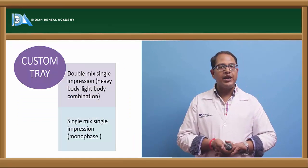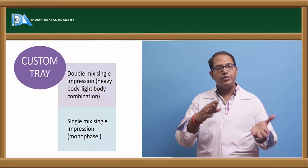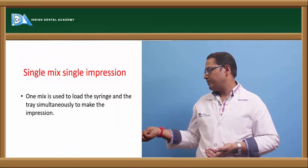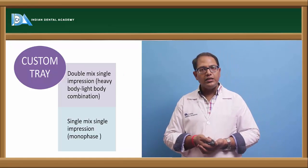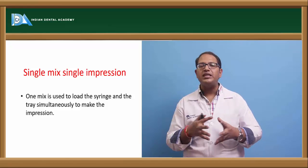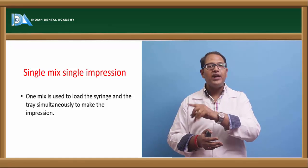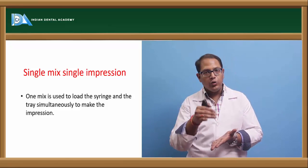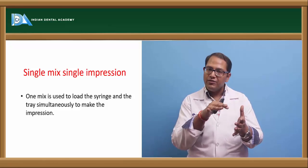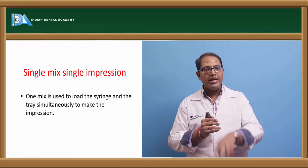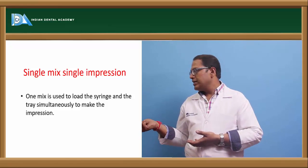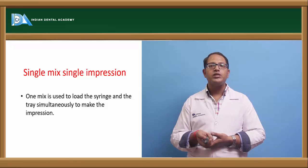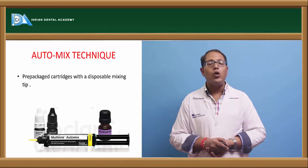For custom trays, the double mix single impression and double mix double impression techniques remain the same, except a custom tray is used instead of a stock tray. Single mix single impression is done with a material called monophase — a one-phased material used both as tray material and as the impression material over the prepared tooth surface. Like light body, the monophase is applied over the teeth and also onto the tray to make a single impression — it mostly comes in red or pinkish color. One mix is used to load the syringe and tray simultaneously. Nowadays we also have auto mix techniques with pre-packed cartridges and multi-unit auto mix with a disposable mixing tip.